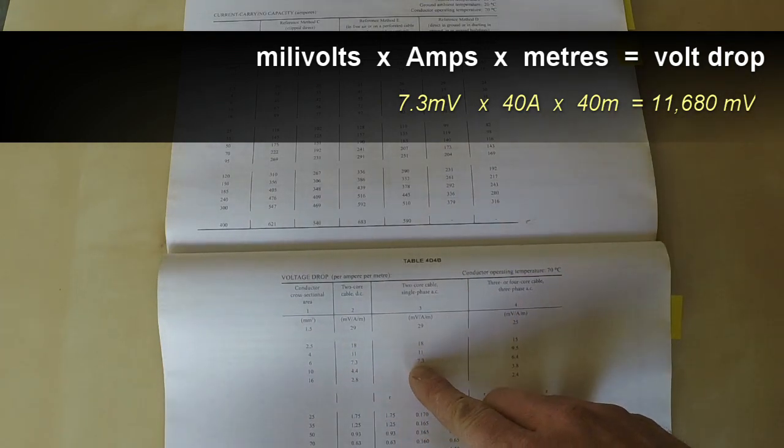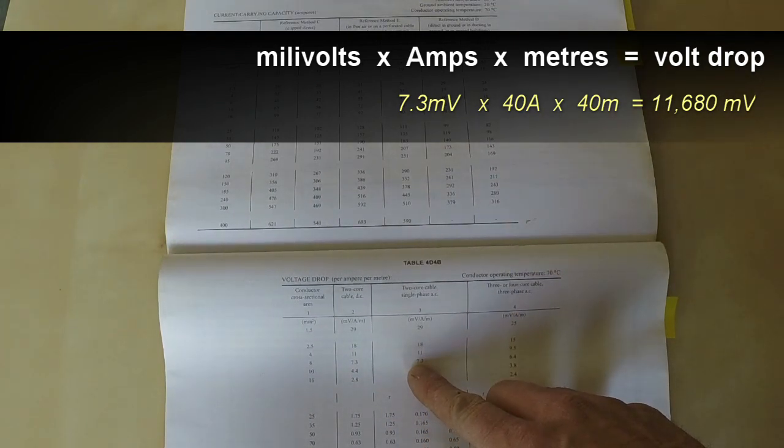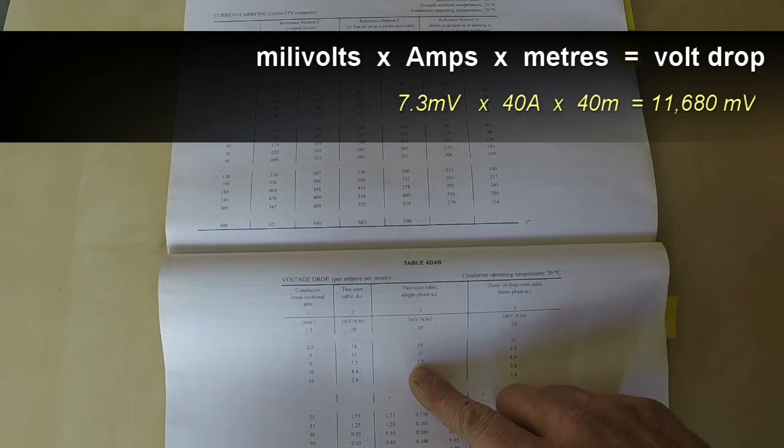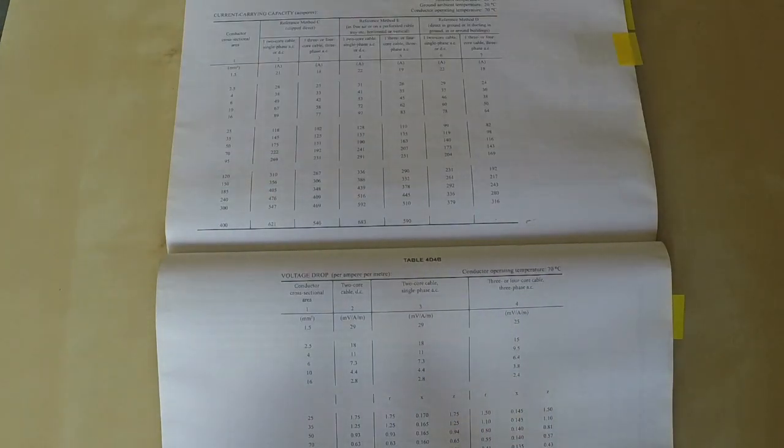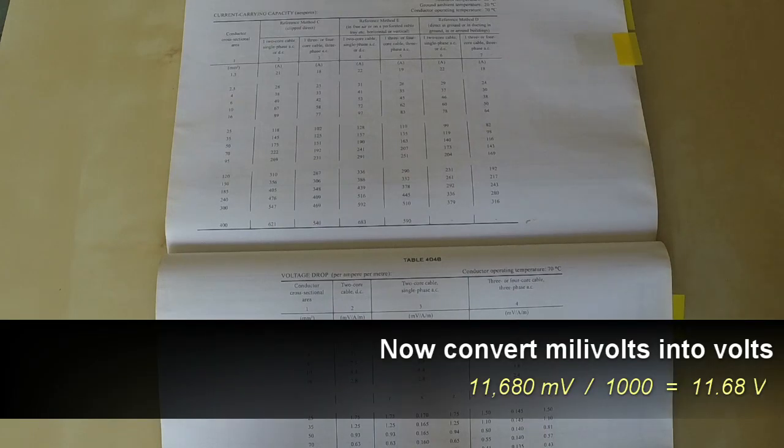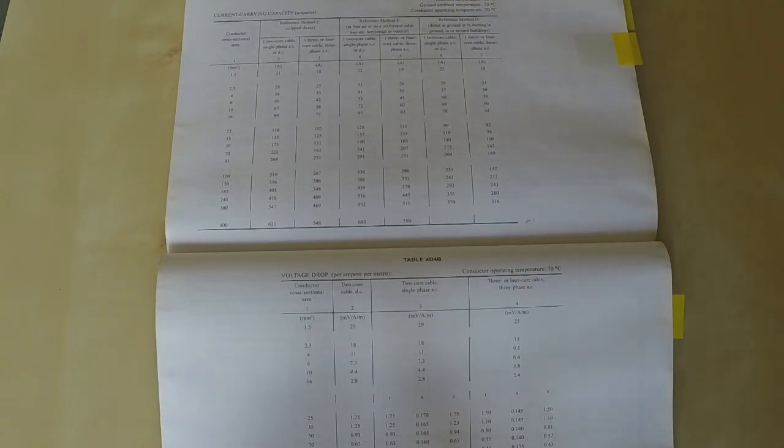Times your 40 meters times 40 amps. Now that gives you 11,680 millivolts. Because we work in volts, we need to convert that into volts, so divide it by a thousand because the 7.3 is in millivolts. That gives you 11.68 volts.